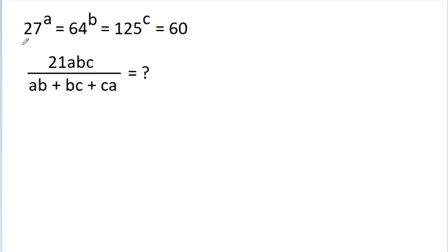In this video we have given that 27 to the power a is equal to 64 to the power b, is equal to 125 to the power c, is equal to 60, and we have to find the value of 21abc divided by ab plus bc plus ca.